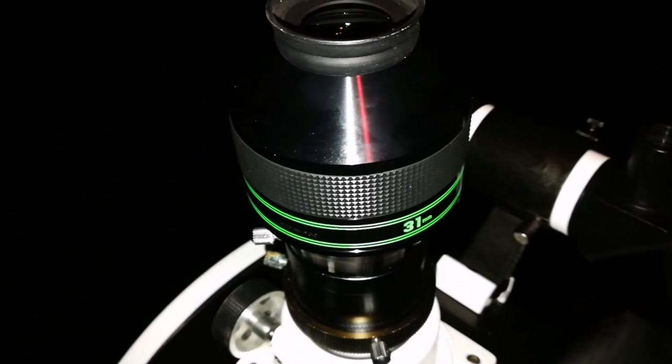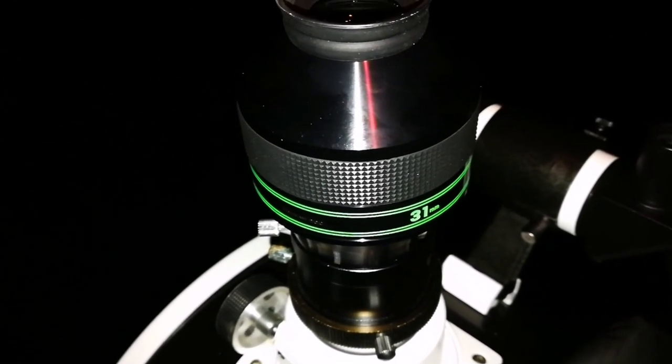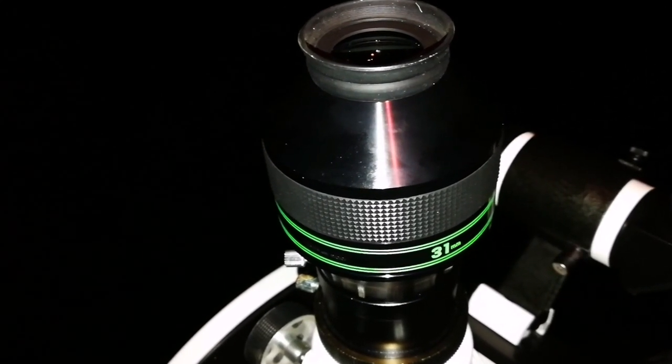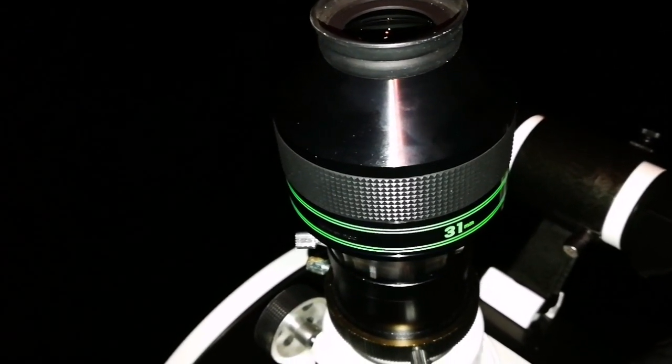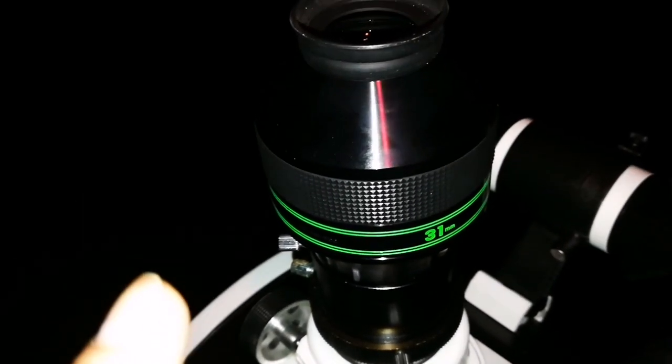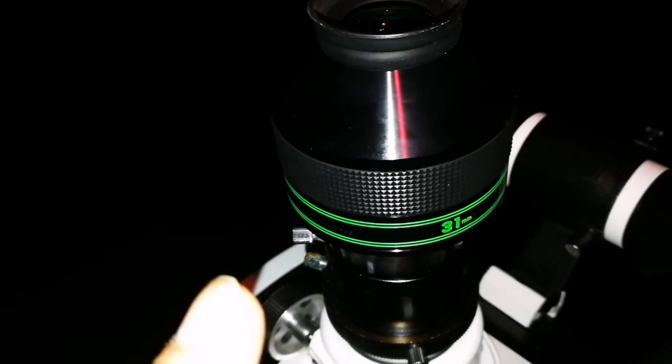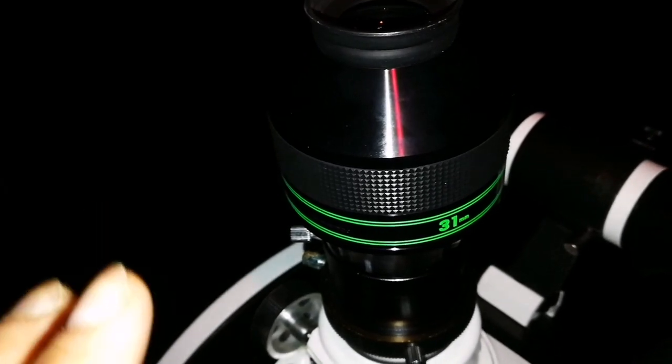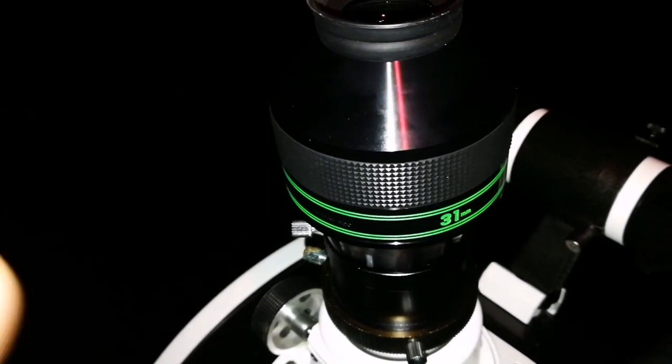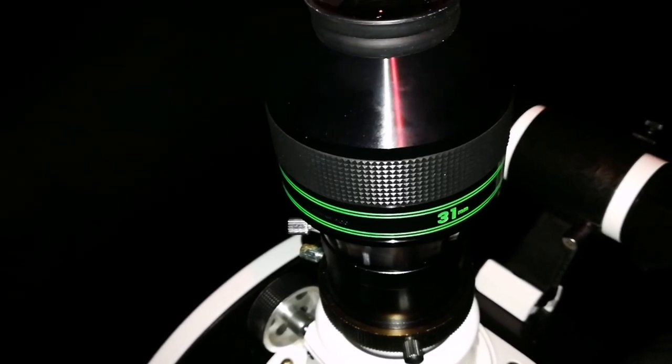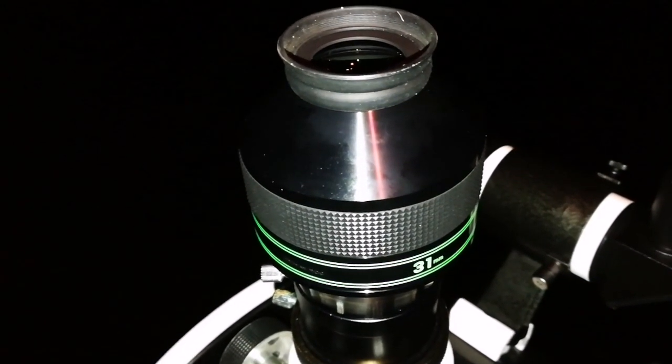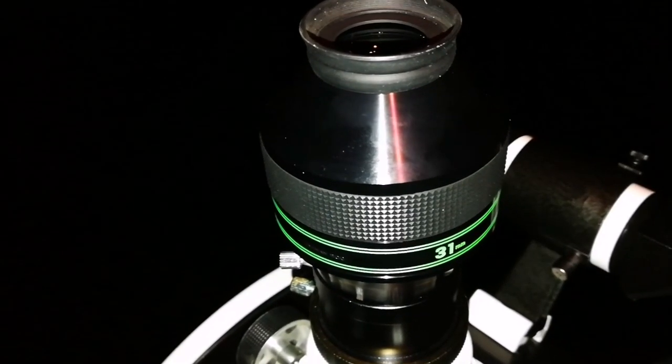I think of these three eyepieces that I used—the Super Plossl Meade 56 millimeter, Maxvision 40 millimeter 68 degrees, and the Nagler 31 Type 5—I prefer the Nagler. Main reason I think is that it gives the highest magnification, means that the sky background will be darker. 40 millimeter and 56 millimeter give more of the sky and increase a little bit of the light pollution creeping into the view. So Nagler is better, and also you can see slightly a tad more detail in the nebula.